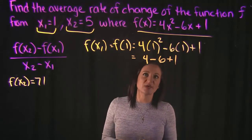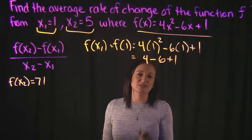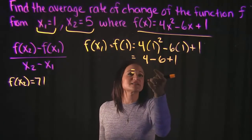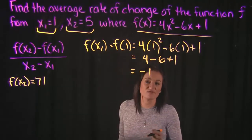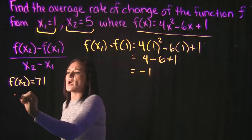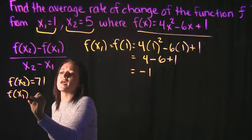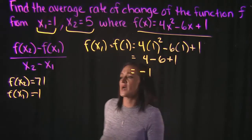So this one was very easy because all we were doing was calculating with 1's here. So 4 minus 6 is a negative 2. Negative 2 plus 1 is a negative 1 there. Alright, so that gives us that f(x1) is equal to negative 1.